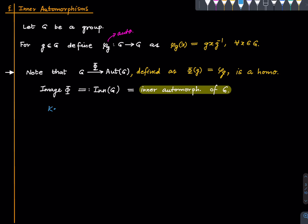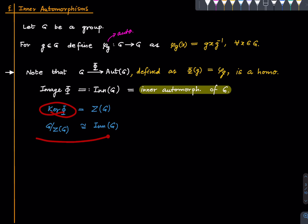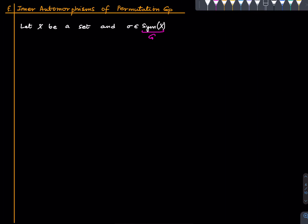The kernel of Φ is the center of the group — I leave that as an exercise. This shows that G modulo the center of G is isomorphic to the inner automorphism group, via the first isomorphism theorem. That's all about inner automorphisms in general.